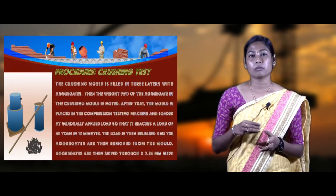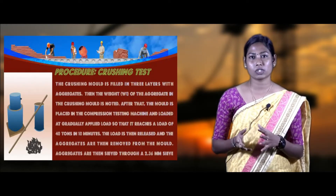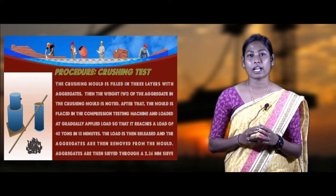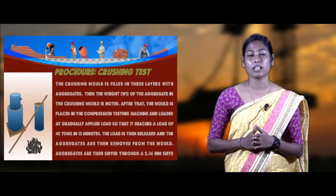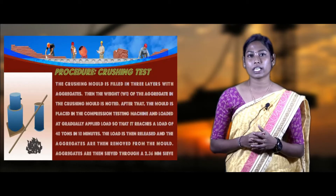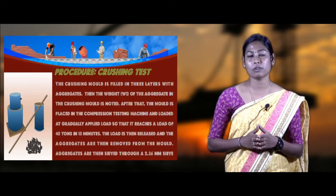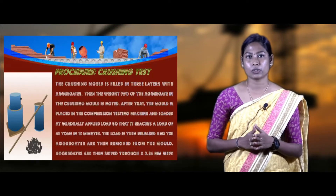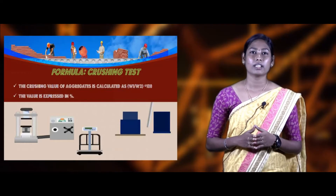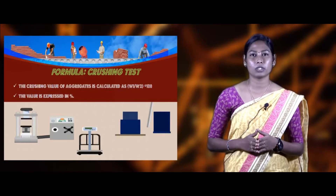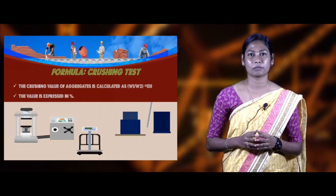Place the sample of aggregates into the cylindrical mold, then place the mold into the compression testing machine and apply the load gradually of 40 tons in 10 minutes. After that, remove the aggregates from the mold, sieve them through the 2.36 mm sieve, and weigh — taken as W2. The formula used to calculate the crushing strength value is: (W2 / W1) × 100, expressed as a percentage.